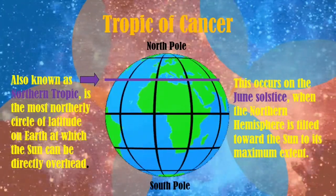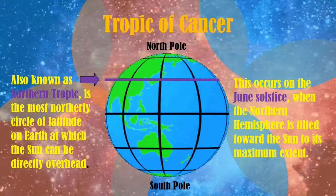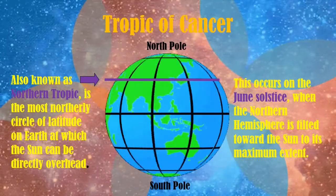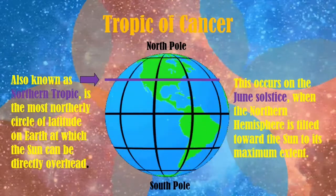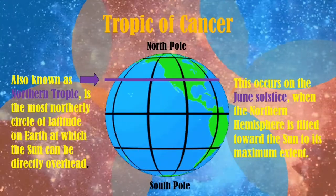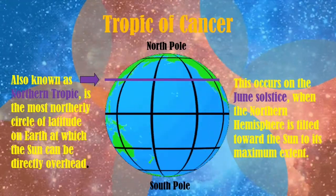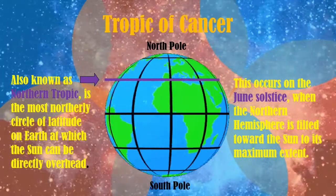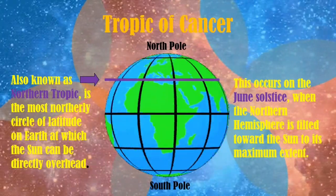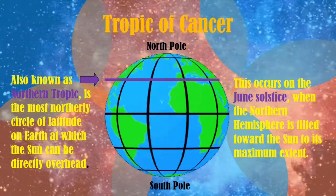The December solstice is the solstice that occurs each December, typically on December 21st, but it can vary by positive or negative one day according to the Gregorian calendar. In the northern hemisphere, the December solstice is the winter solstice, while in the southern hemisphere, it is the summer solstice.